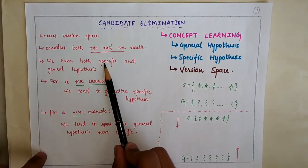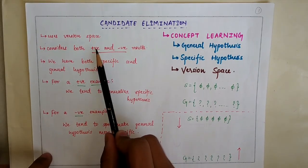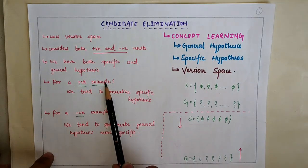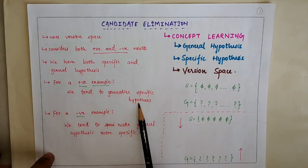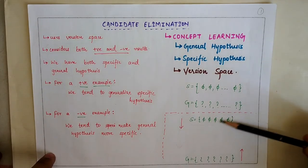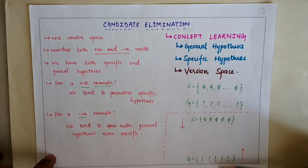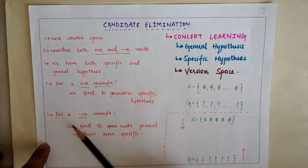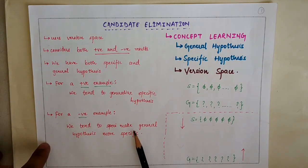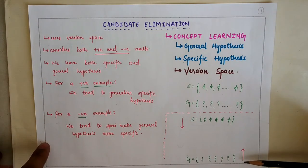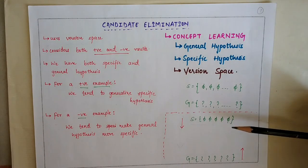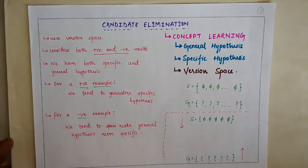The Candidate Elimination Algorithm uses version spaces and has both specific as well as general hypotheses. It considers both positive as well as negative examples. For a positive example, we generalize our specific hypothesis — moving from top to bottom, from specific to general, as seen in the Find-S algorithm. For a negative example, we move from general to specific, achieving more specificity.